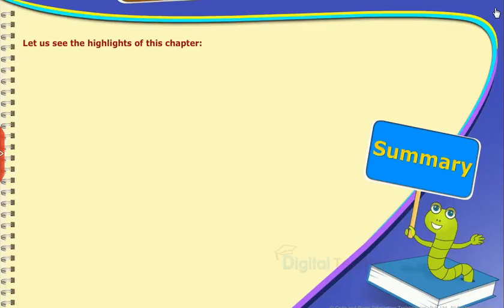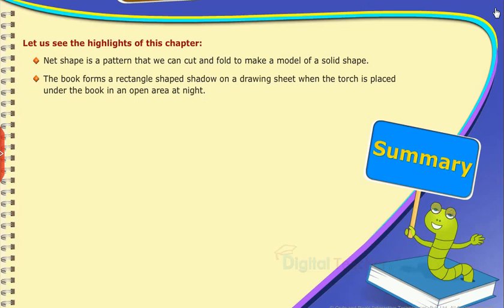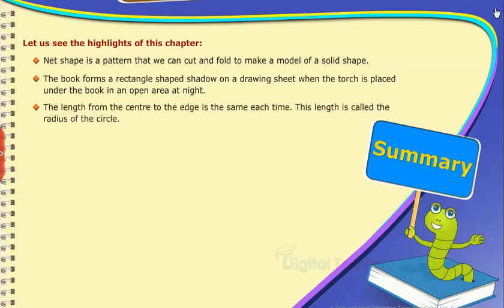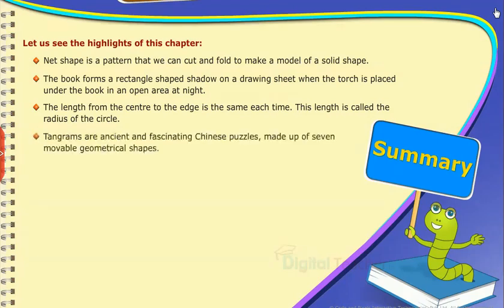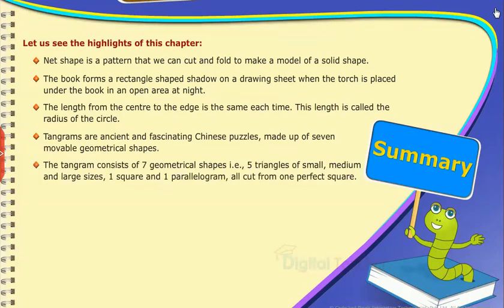Summary: Let us see the highlights of this chapter. Net shape is a pattern that we can cut and fold to make a model of a solid shape. The book forms a rectangle shaped shadow on a drawing sheet when the torch is placed under the book in an open area at night. The length from the center to the edge is the same each time. This length is called the radius of the circle. Tangrams are ancient and fascinating Chinese puzzles made up of seven movable geometrical shapes. The tangram consists of seven geometrical shapes: that is five triangles of small, medium and large sizes, one square and one parallelogram, all cut from one perfect square.